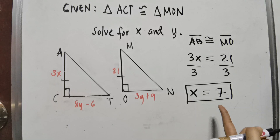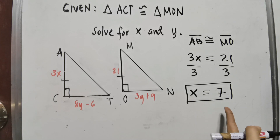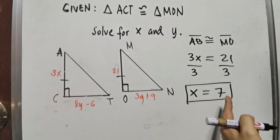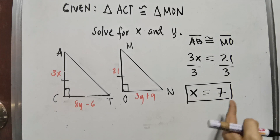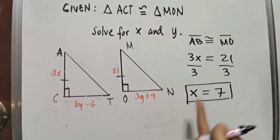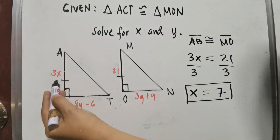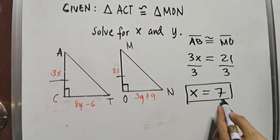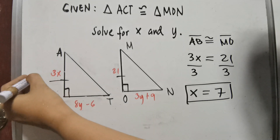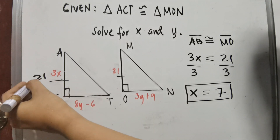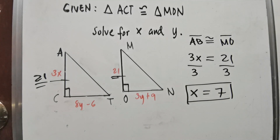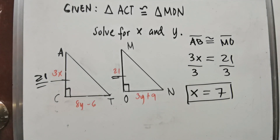To check if the value of X is correct, substitute 7 into the given measurement 3X. So 3 times 7 is also 21. Ibig sabihin, they have the same measure because they are congruent.